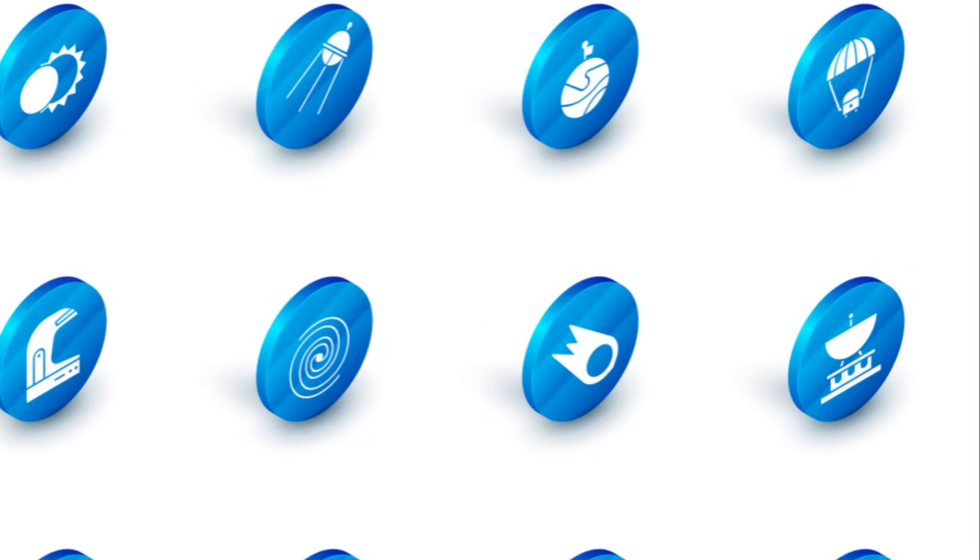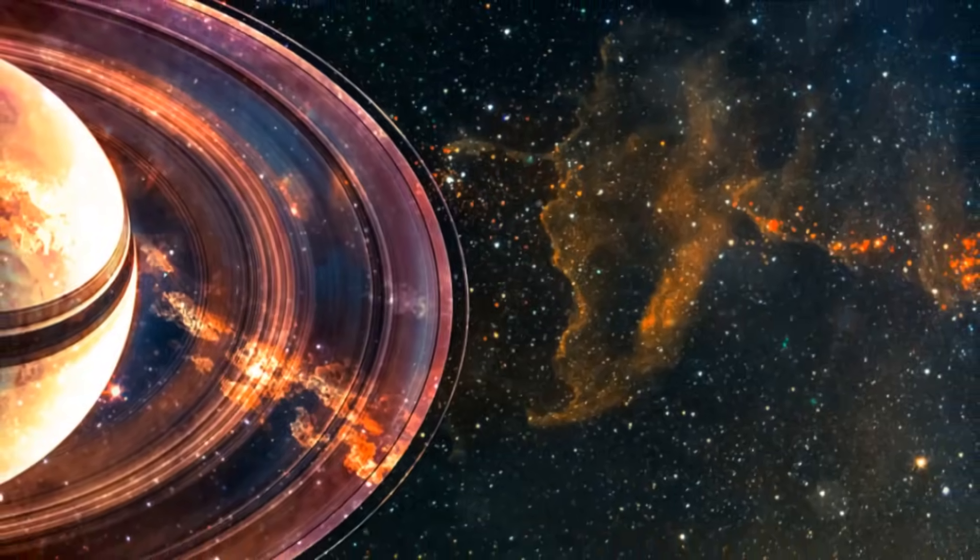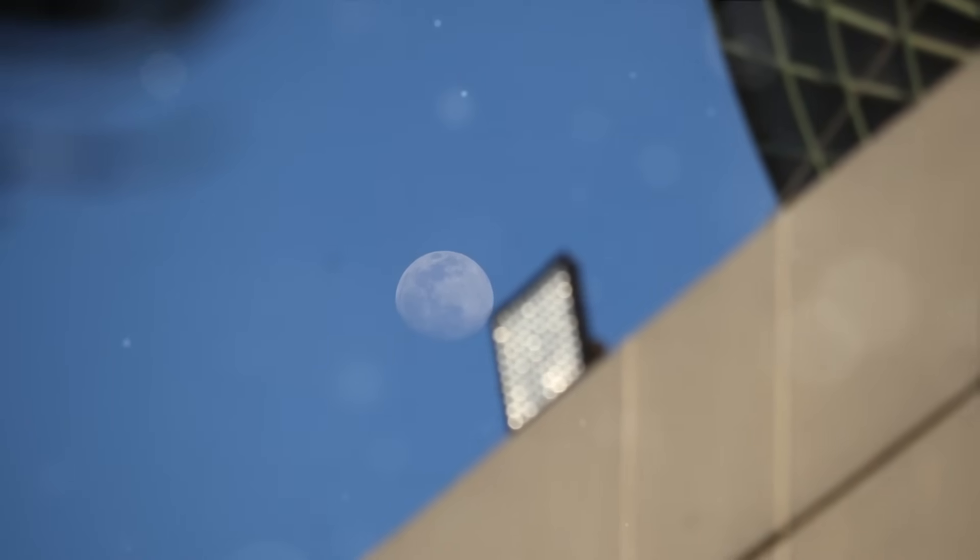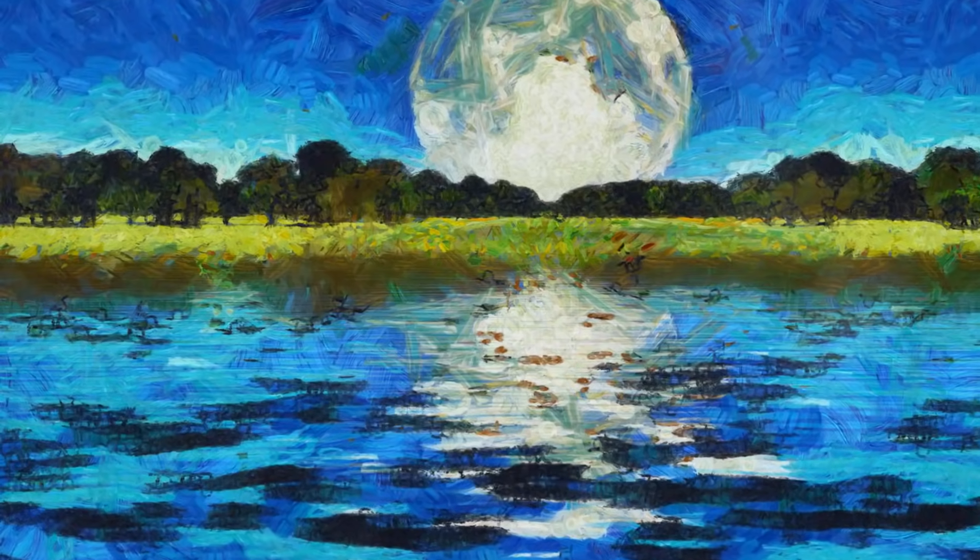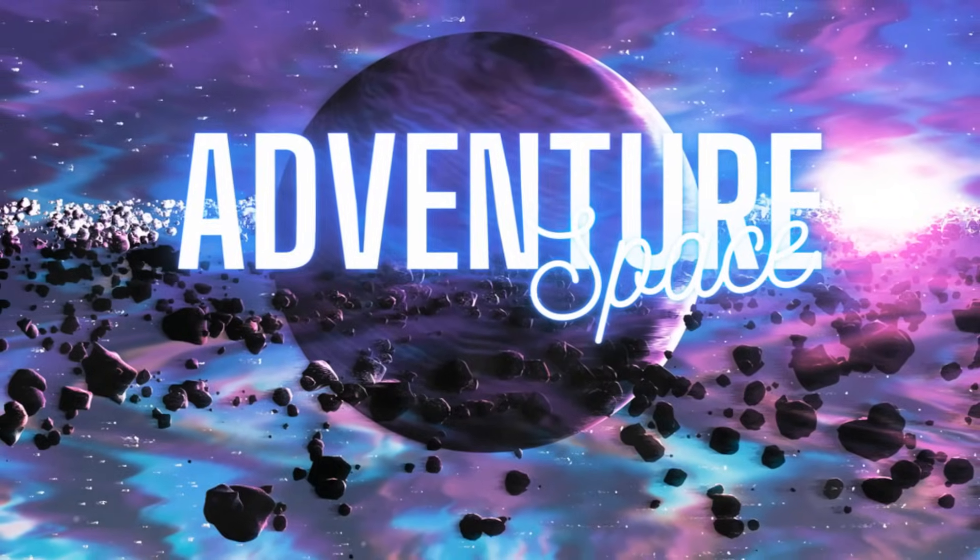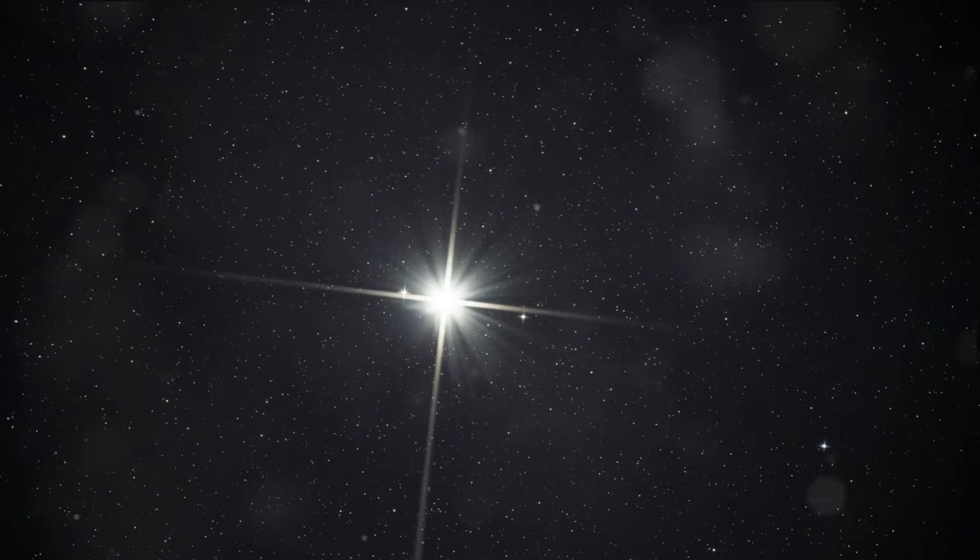Saturn's splendors don't stop at its rings. The planet is also host to a large family of moons, with more than 80 known moons to date. Among these, Titan stands out. Titan is the second largest moon in our solar system, even bigger than the planet Mercury. It's the only moon known to have a dense atmosphere and stable bodies of surface liquid, making it a fascinating subject for scientists.